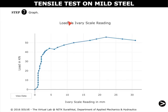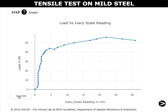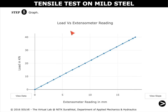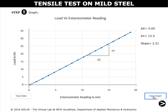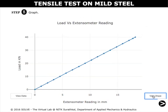Here we can view the load versus ivory scale reading graph. When we scroll the mouse pointer over the graph, the values can be seen clearly. Click on view data to see the data of the graph. This graph depicts the load versus extensometer reading. If we want to view the slope drawn, click on view slope. We can go back to viewing the graph by clicking on the graph.